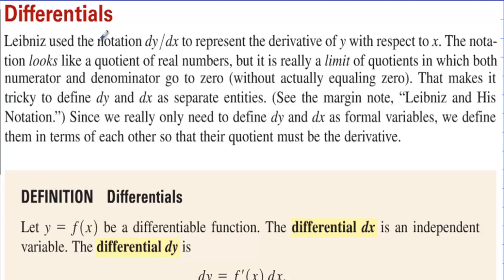Differentials. Leibniz used the notation dy dx to represent the derivative of y with respect to x. The notation looks like a quotient of real numbers, but is really a limit of quotients in which both numerator and denominator go to 0, without actually equaling 0. That makes it tricky to define dy and dx as separate entities.